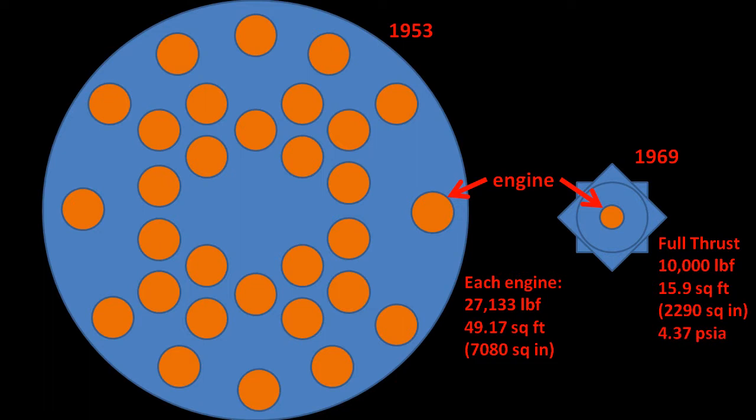If you do the same for one of the engines on von Braun's 1953 concept rocket, you get 3.83 PSI, about 88% of the lunar module descent engine's value.